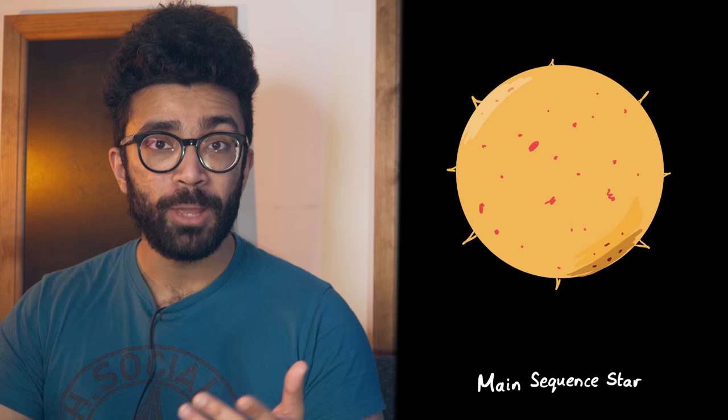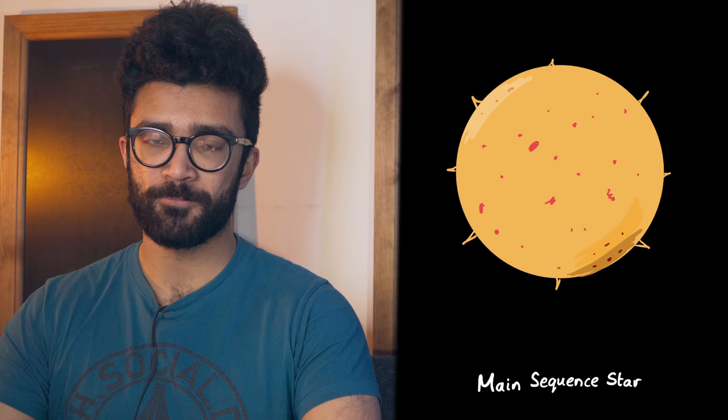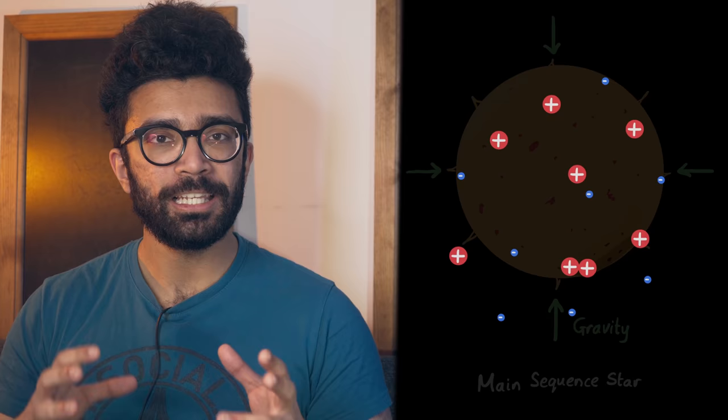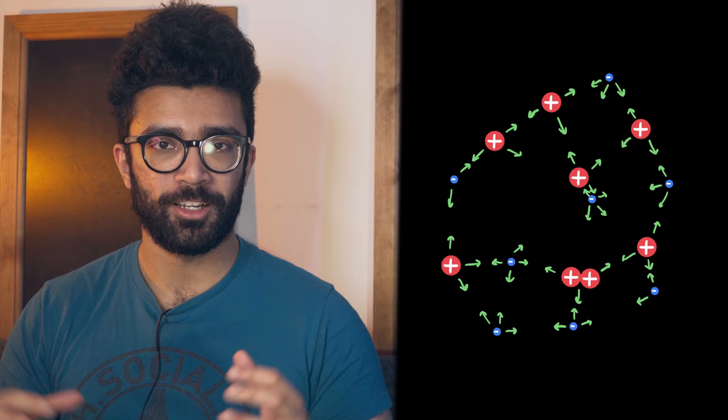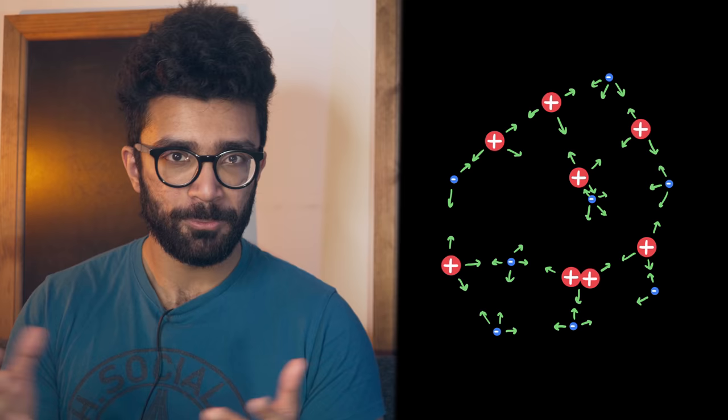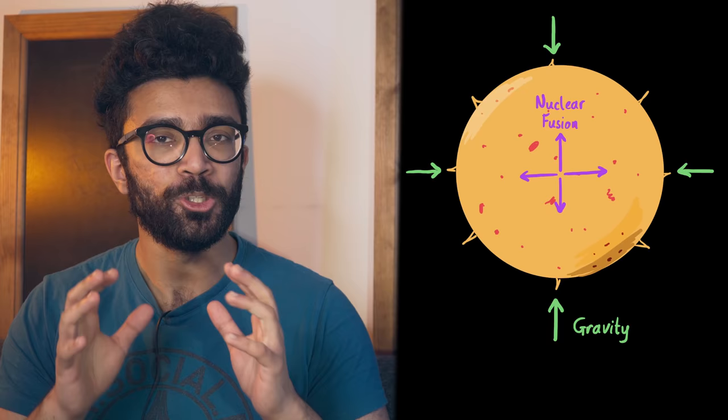During the life cycle of a standard main-sequence star like our Sun, there are two major competing forces. One is the force of gravity, which is attractive in nature. This means that all the little particles making up the star will attract each other and tend to cause the star to get smaller and smaller, or to collapse in on its center. The reason this doesn't happen, though, is because in a main-sequence star, there are also outward forces being exerted,